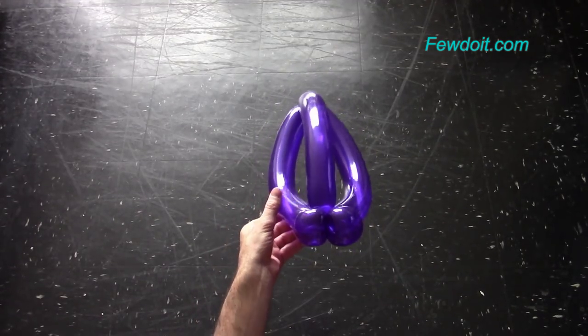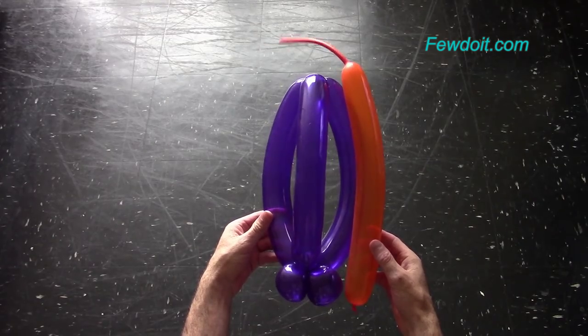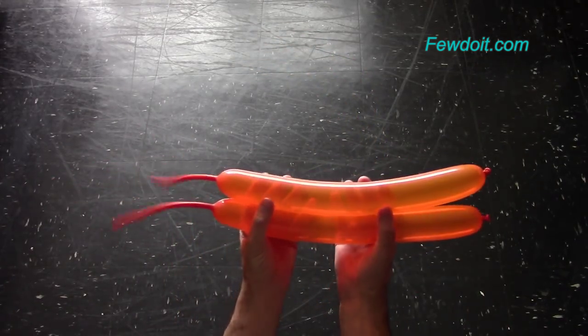If you have larger size bubble at the end of the balloon, the sixth bubble, you can use it as a mouth. Now I'm going to use two orange balloons to make the top of the head.